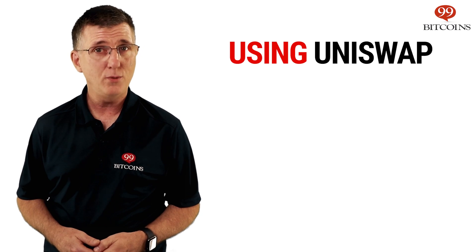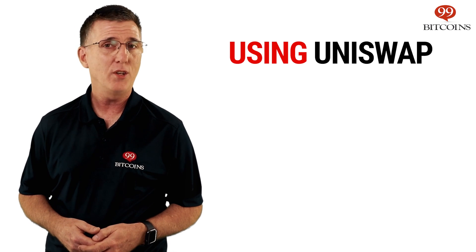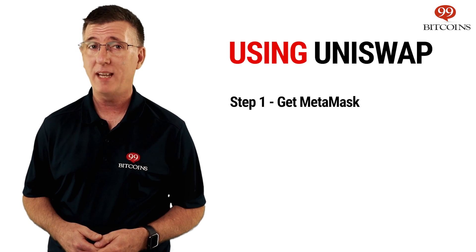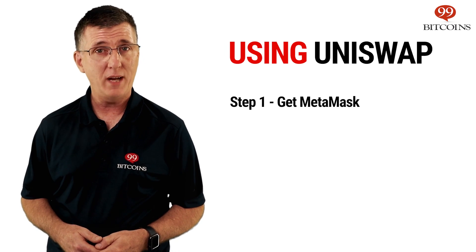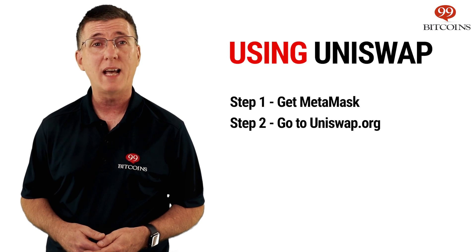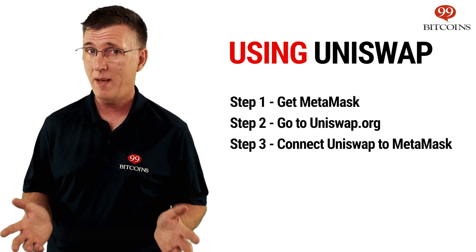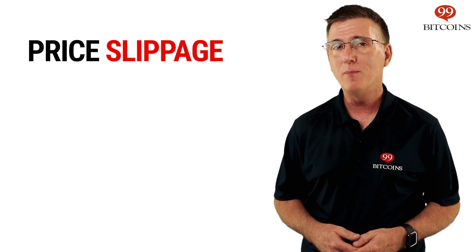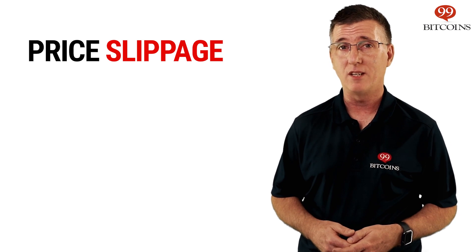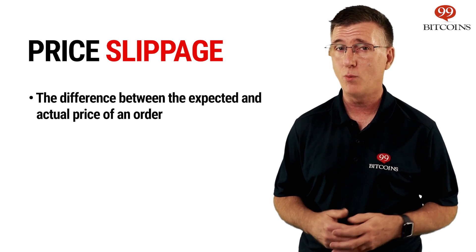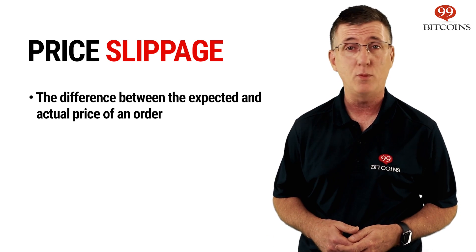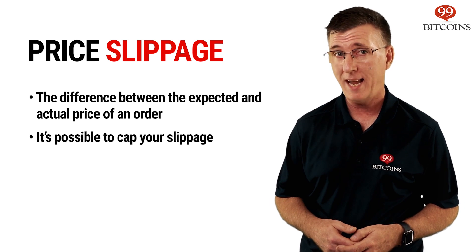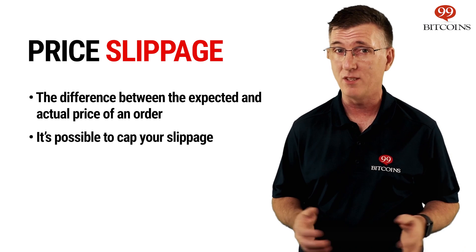So how do you actually use Uniswap? It's fairly simple. All you need is an Ethereum wallet like MetaMask which can interact with other Ethereum applications. Once you have MetaMask installed on your browser, head over to Uniswap.org, click on Connect Wallet, choose MetaMask, and now you can start trading any Ethereum ERC20 token that is listed. Keep in mind that since there are many people conducting trades simultaneously, the price shown when you place your order may be different from the actual price when the order is executed. This phenomenon is called slippage, and you're able to cap how much slippage you're willing to tolerate before canceling your order.